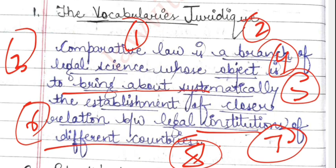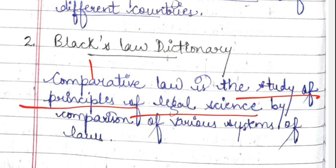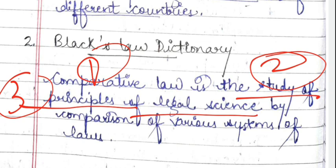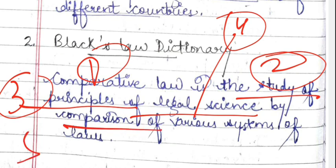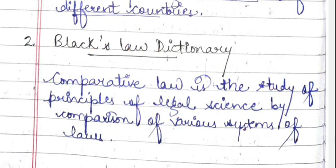Another definition is from Black's Law Dictionary: Comparative law is the study of principles of legal science derived by comparison of various systems of laws. The essence is the same as the previous definition — there is just a difference of words.